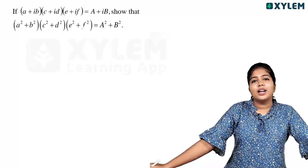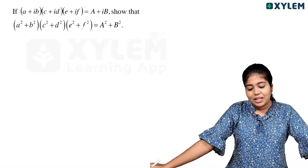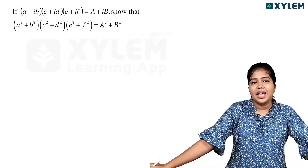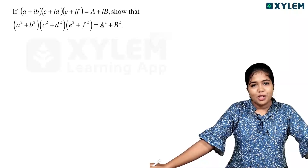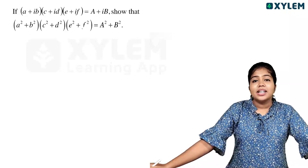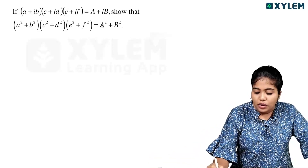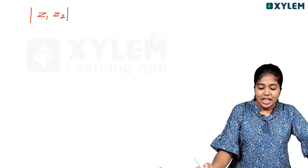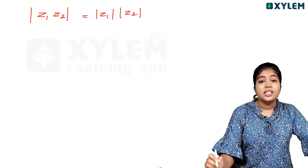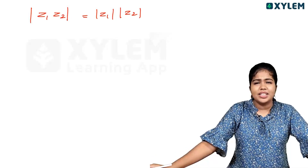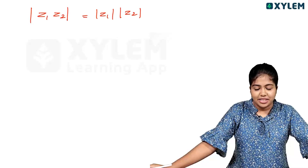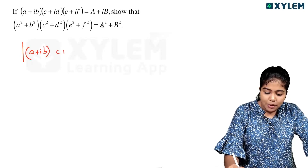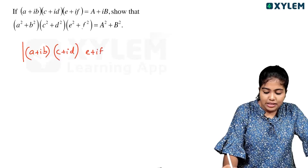Next question: if (a plus ib) into (c plus id) into (e plus if) is equal to a plus ib, show that (a squared plus b squared) into (c squared plus d squared) into (e squared plus f squared) is equal to a squared plus b squared. We use the property that the modulus of a product equals the product of the moduli.